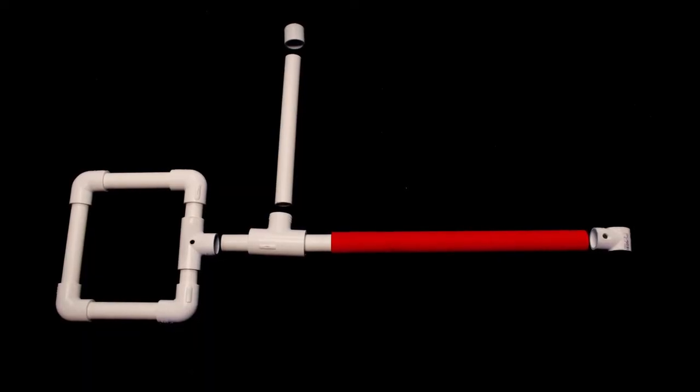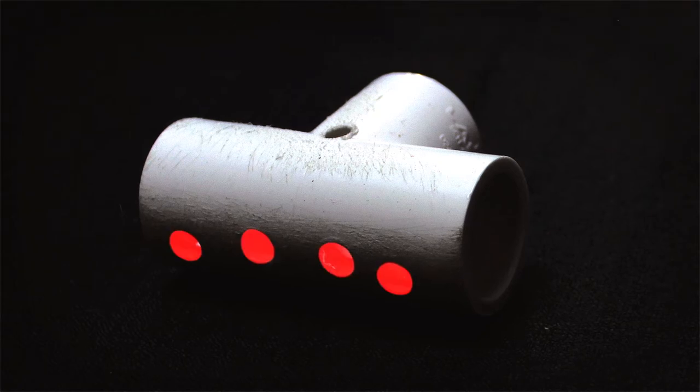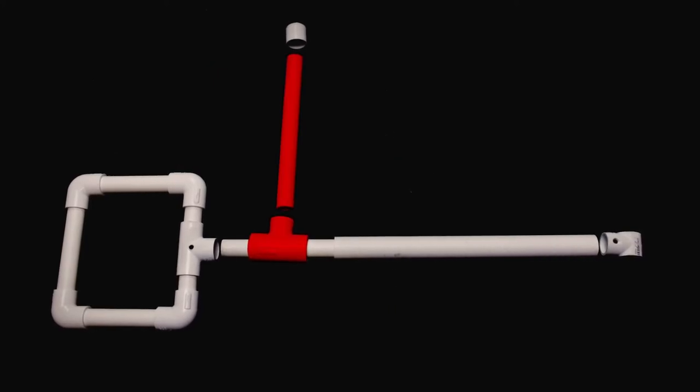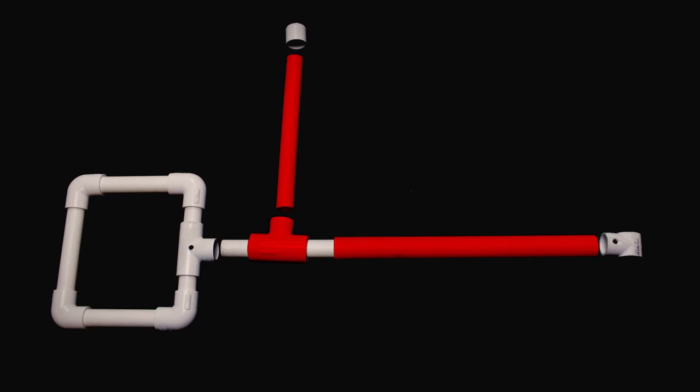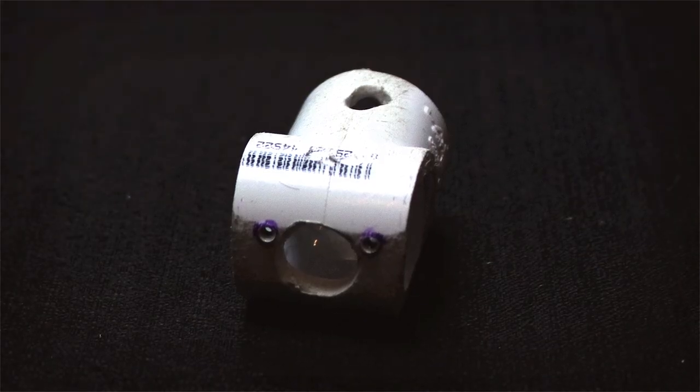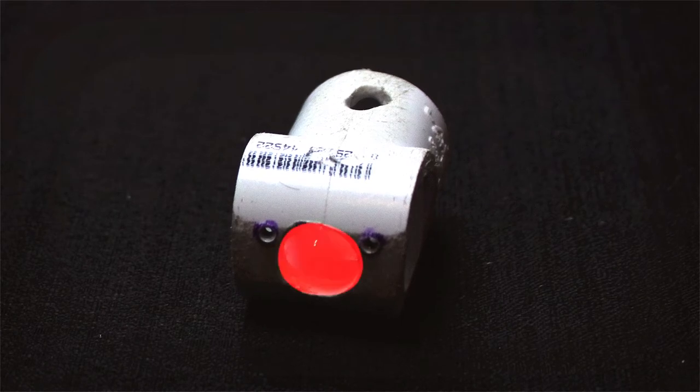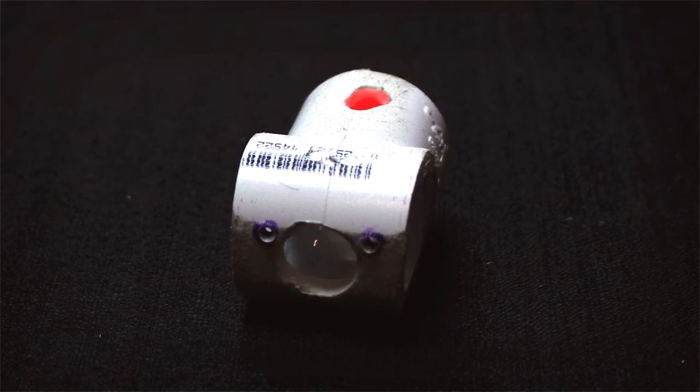Now assemble the frame beginning with the base. Use the half-inch T-connector with four holes drilled on top and one at the center. This will be for the base. Use the larger T-connector to attach the handle and the outer forearm, but don't glue it yet. Use the other half-inch T-connector for the wrist. Cut off both ends with a pipe cutter, then drill a large hole on top and a smaller one at the center.